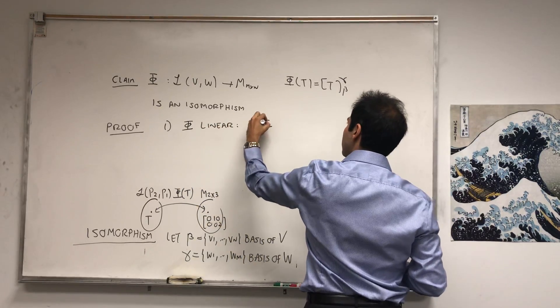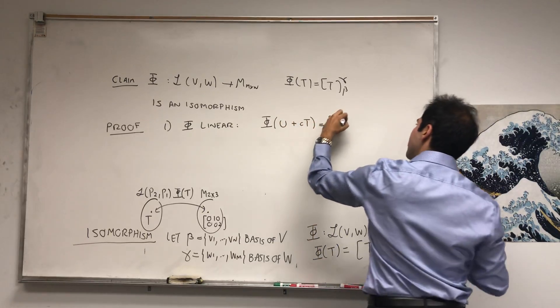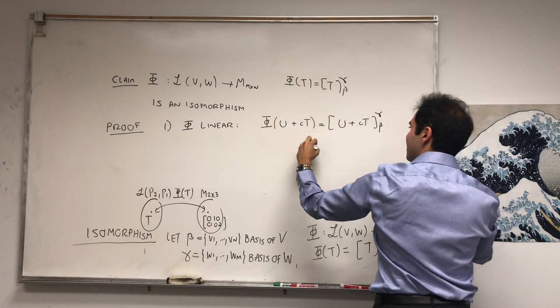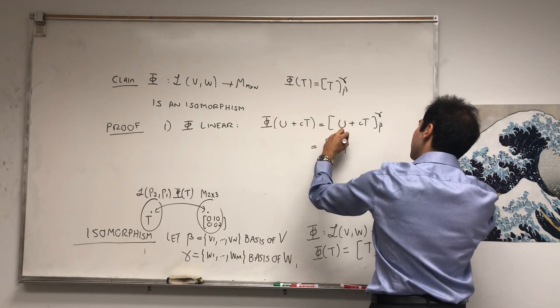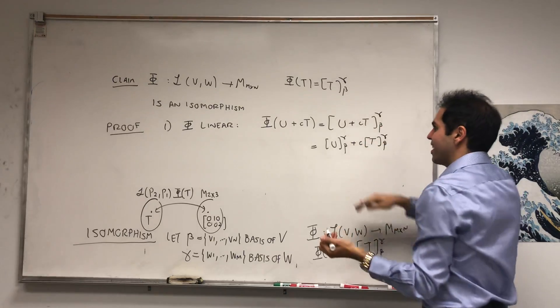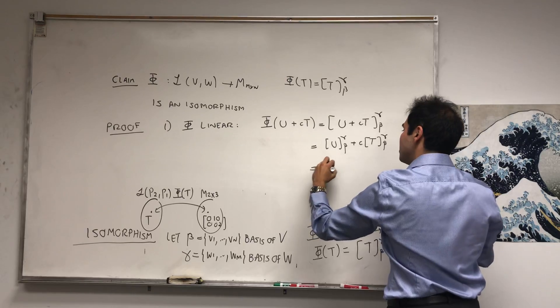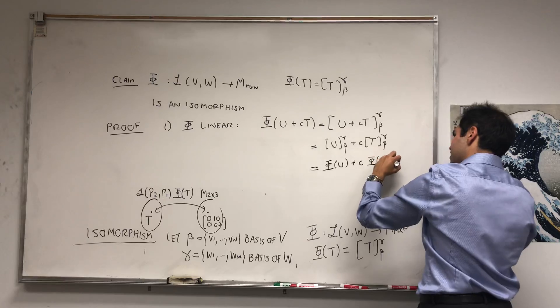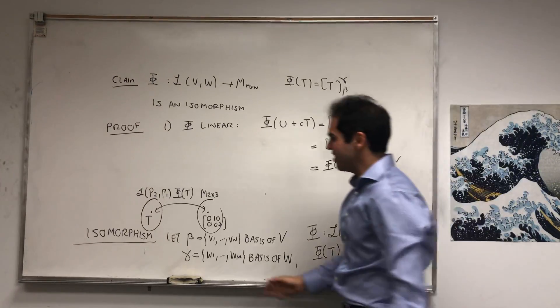What this means is simply if you take phi(U + cT), well that's the matrix of U + cT from beta to gamma, and by linearity of this matrix transformation, that's [U]_beta^gamma + c[T]_beta^gamma. Technically I'm cheating, but you can show independently that this is true, and that's phi of U plus c phi of T.